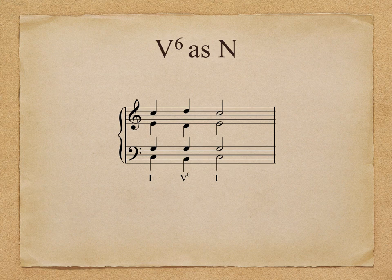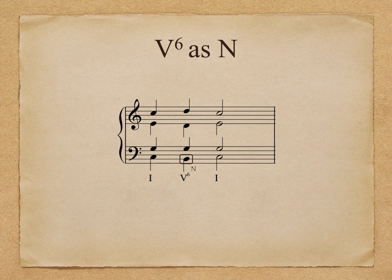A first inversion neighbor chord can also prolong a given function. Neighbor chords occur between two chords of the same position because the neighbor tone departs and returns to the same pitch in the bass, just as in our example here where the bass moves from C to D and back to C again. The inversion of V occurs through neighbor motion and prolongs the tonic harmony on either side of it. Listen to this example and see if you can hear DO-TI-DO in the bass.